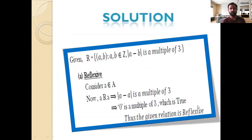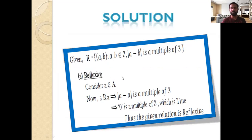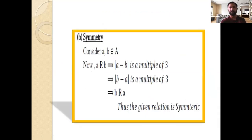Step 1: Show that the given relation is reflexive. Consider a single element a which is an element of the given set A. To show reflexivity, we consider the element related to itself. This gives |a - a| = 0, and 0 is a multiple of 3, which is a true statement. Therefore, the given relation R is reflexive.